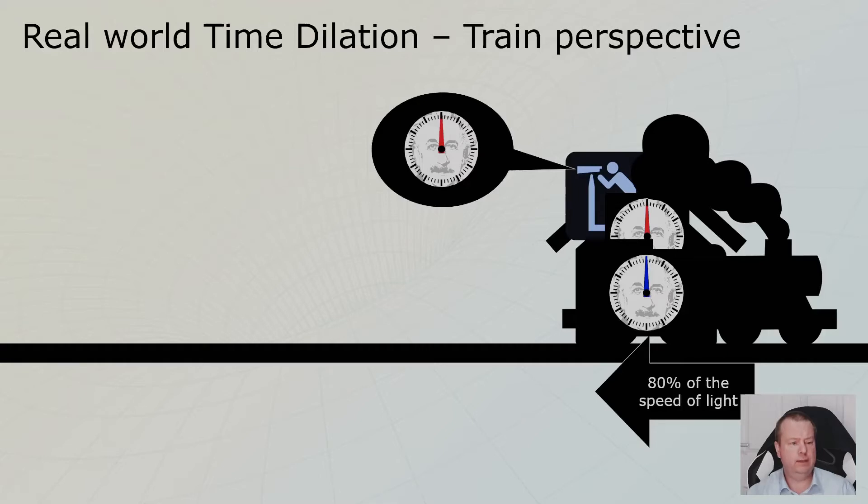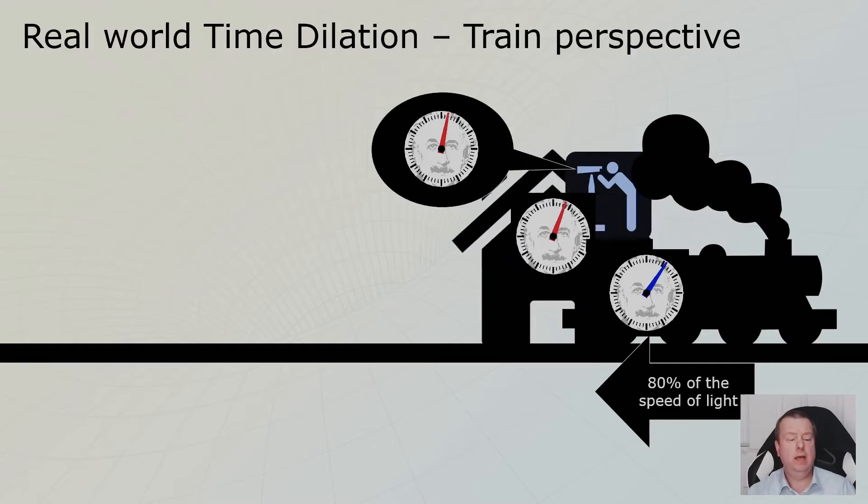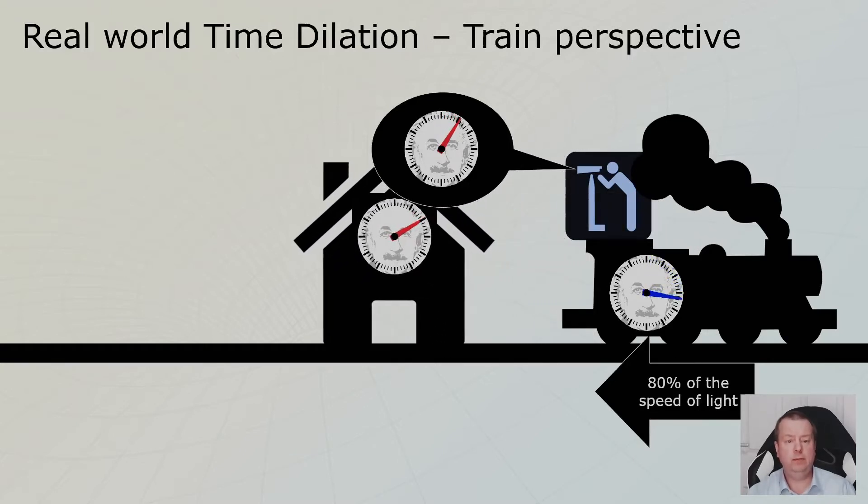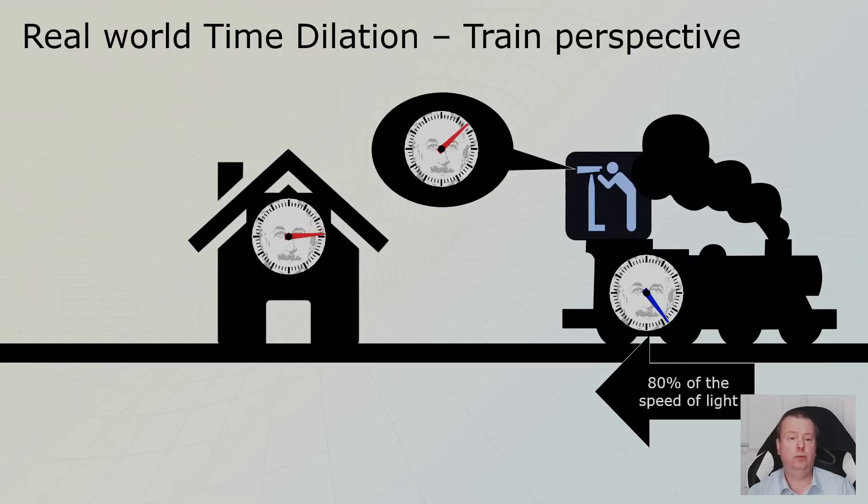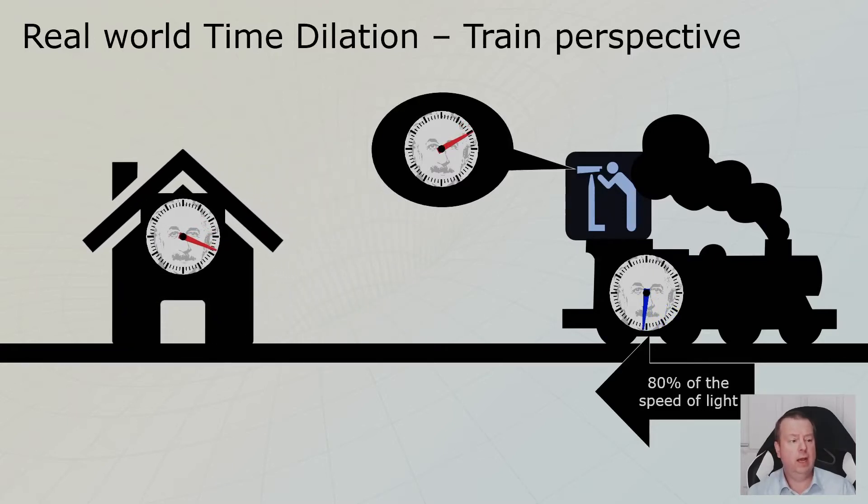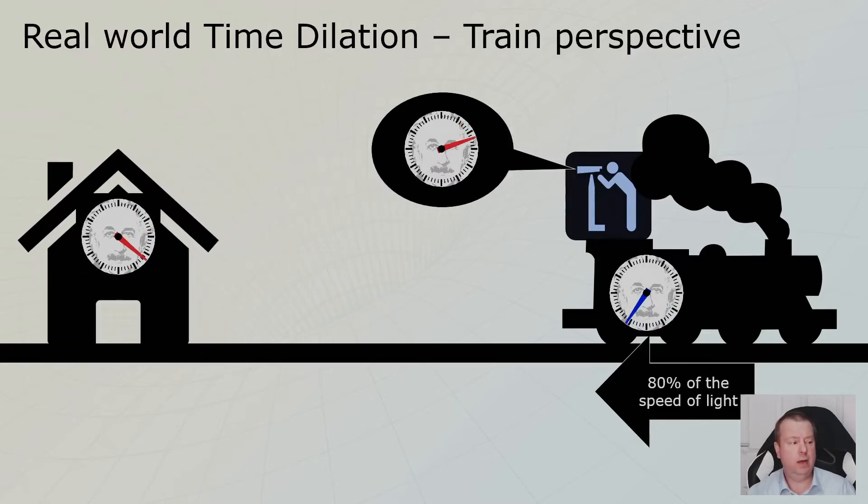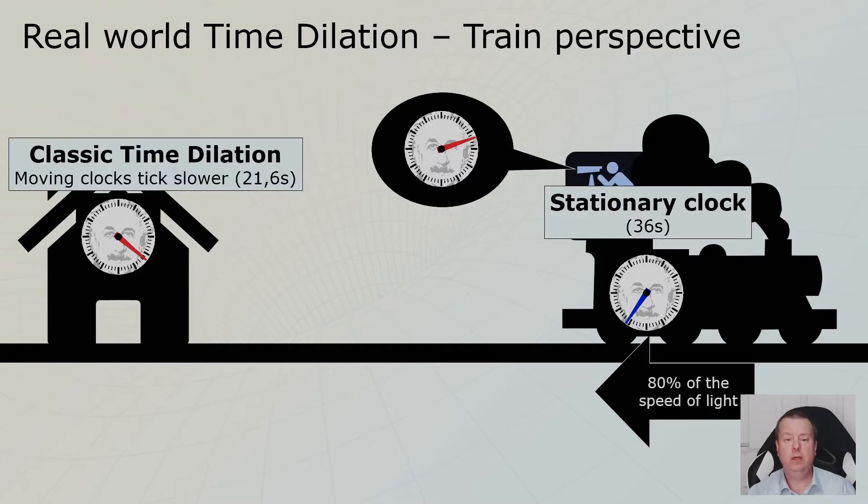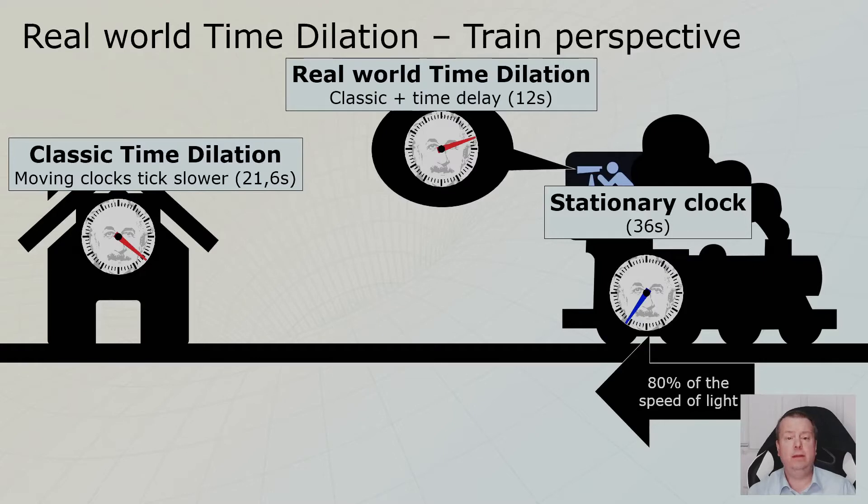And this was the second animation. Now the train is not moving, but the house is moving from the perspective of the train. And we did the same thing. We let the clock in the train, because now we are in the train, travel for 36 seconds. And we watched the clock in the house and the clock in the house ticked 21.6 seconds. And we saw in our telescope 12 seconds.